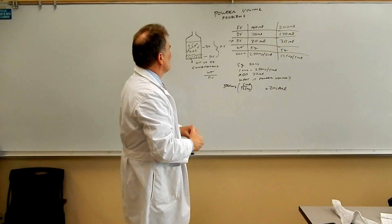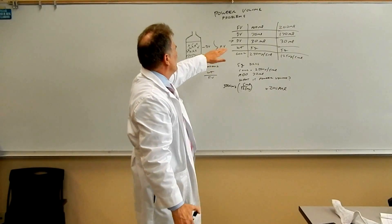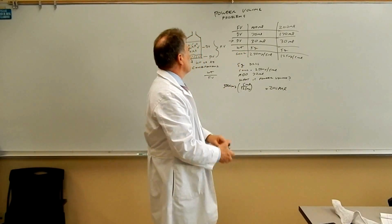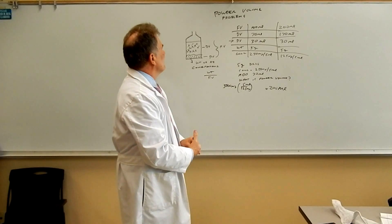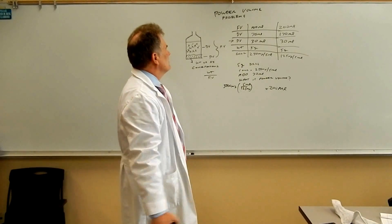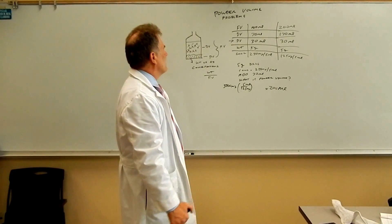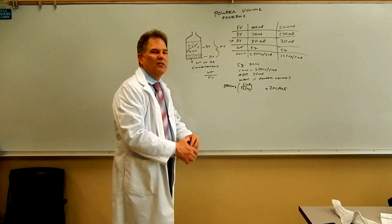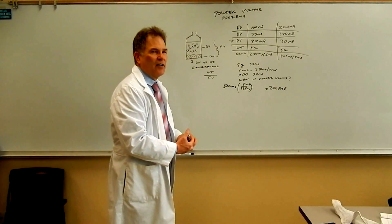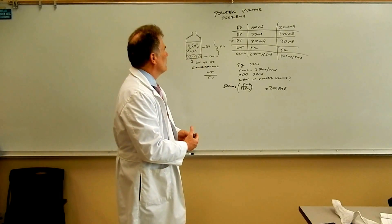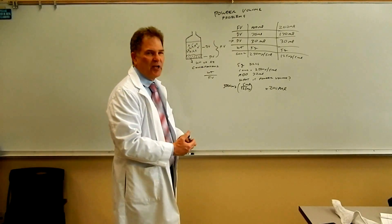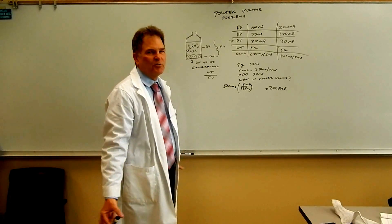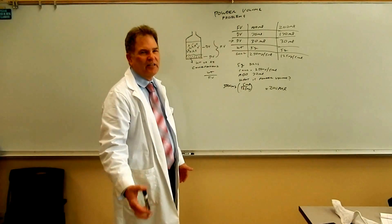Sometimes they don't ask about weight or concentration at all. They'll just say something like: you added 65 mLs to a vial and ended up with 100 mLs — what was the powder volume? You just subtract 65 from 100 to get 35 mLs.